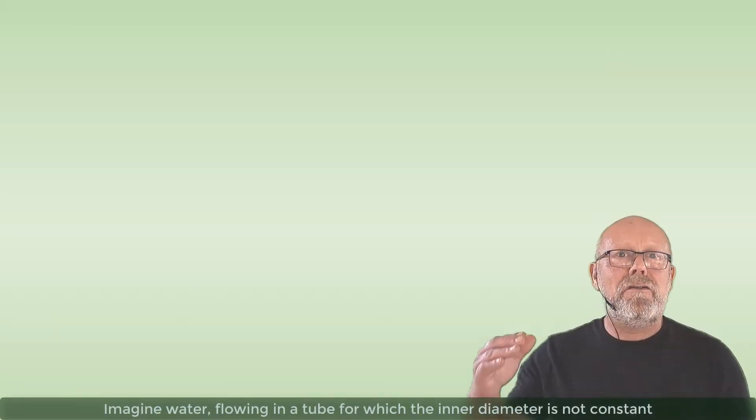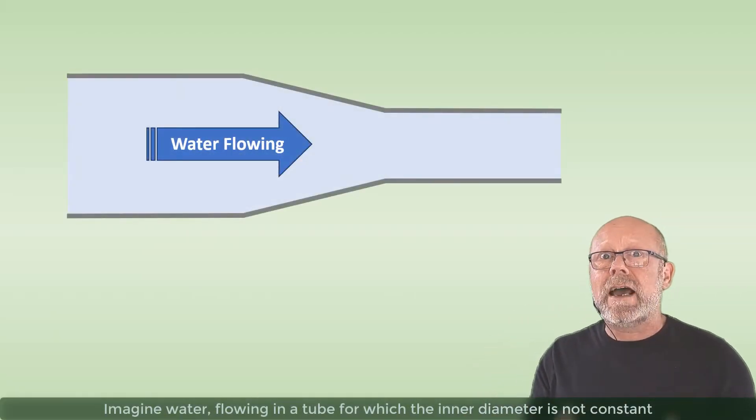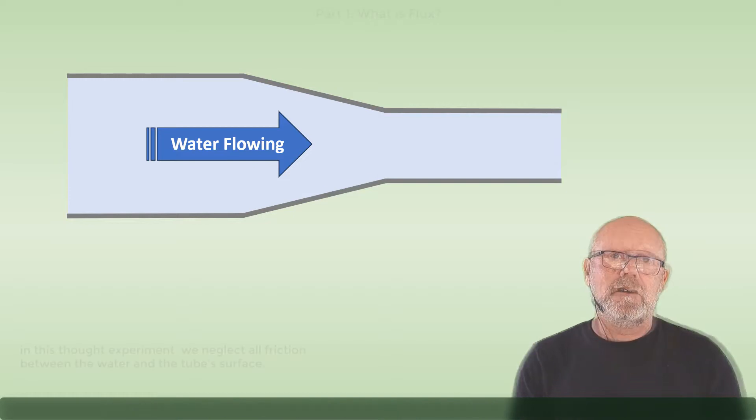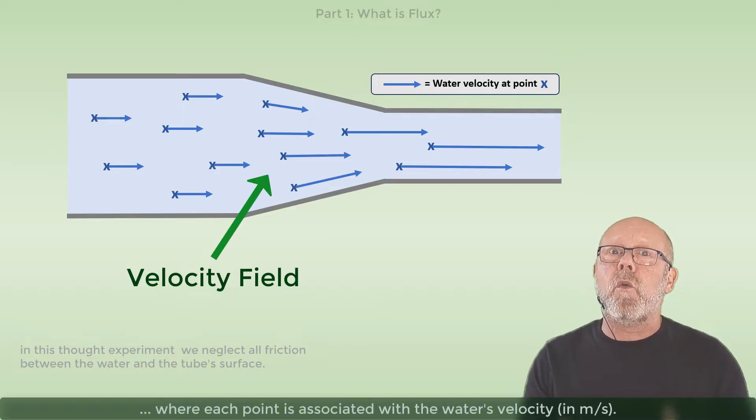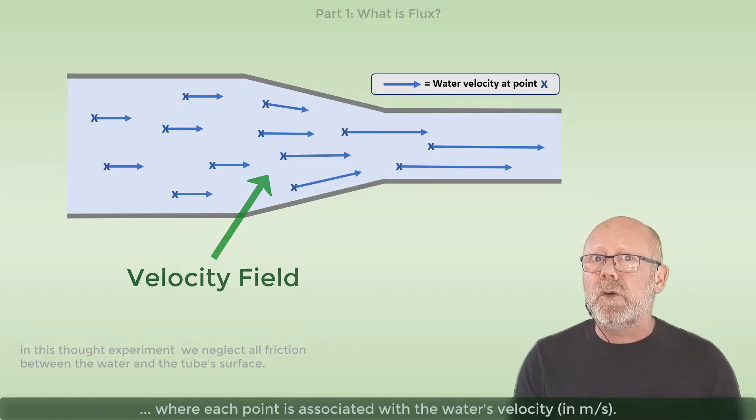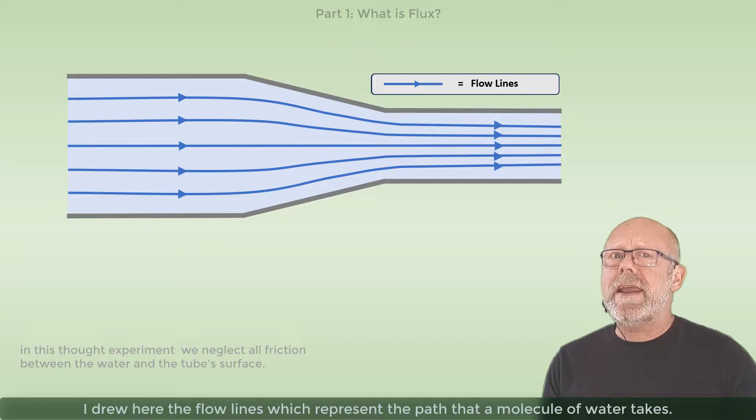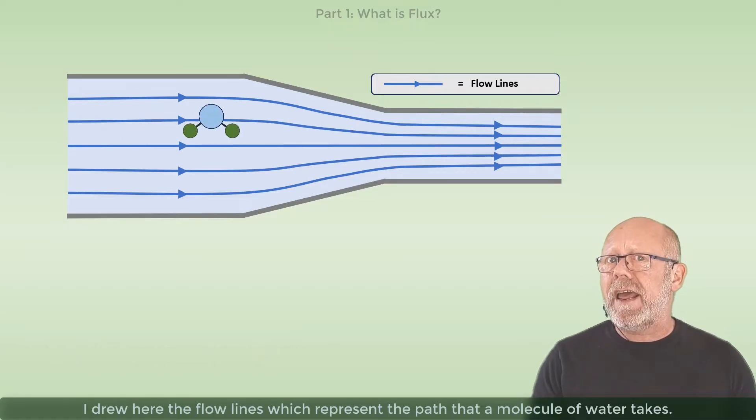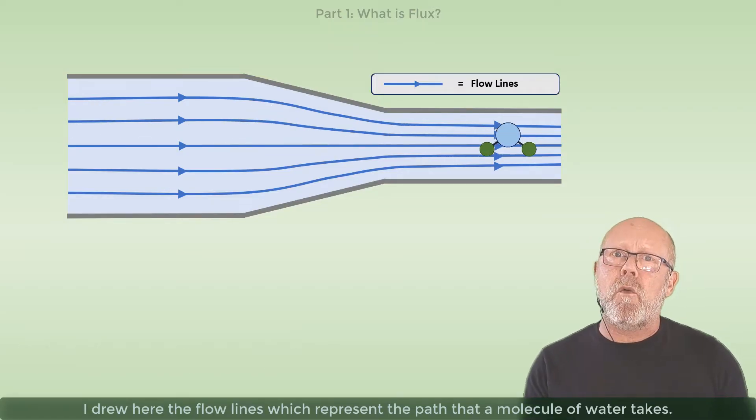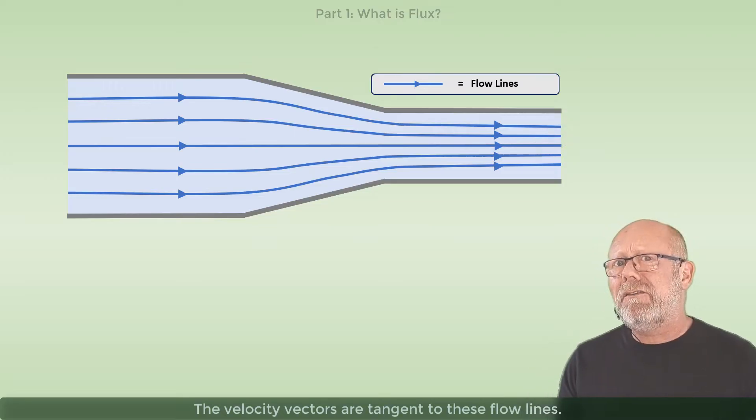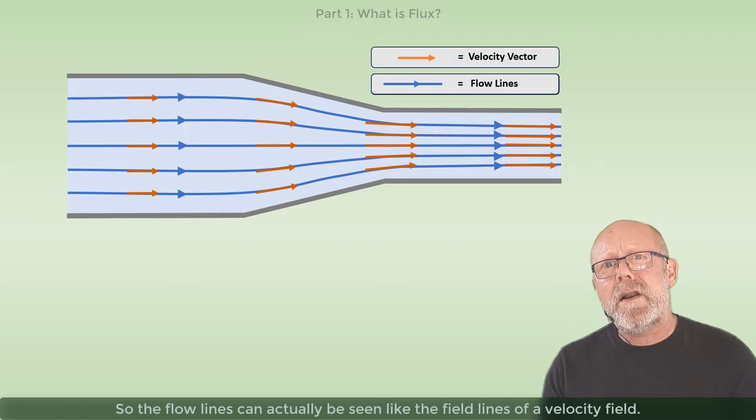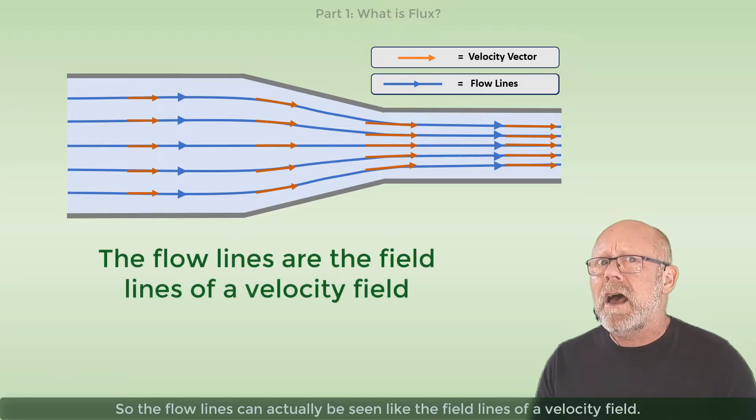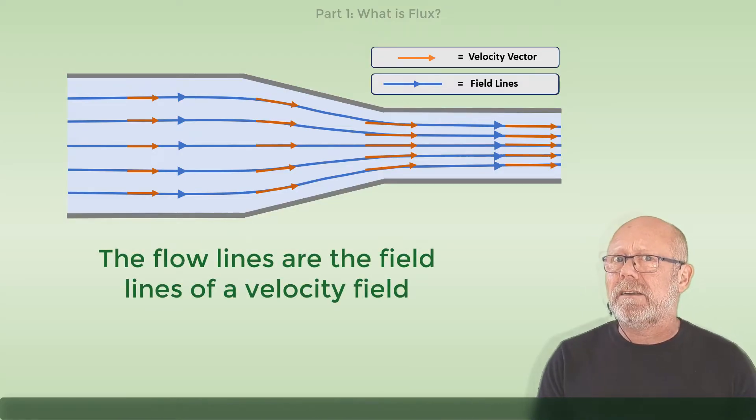Imagine water flowing in a tube for which the inner diameter is not constant. You can see the water like a three-dimensional vectorial field, where each point is associated with the water's velocity in meters per second. I drew here the flow lines, which represent the path that a molecule of water takes. The velocity vectors are tangent to these flow lines.